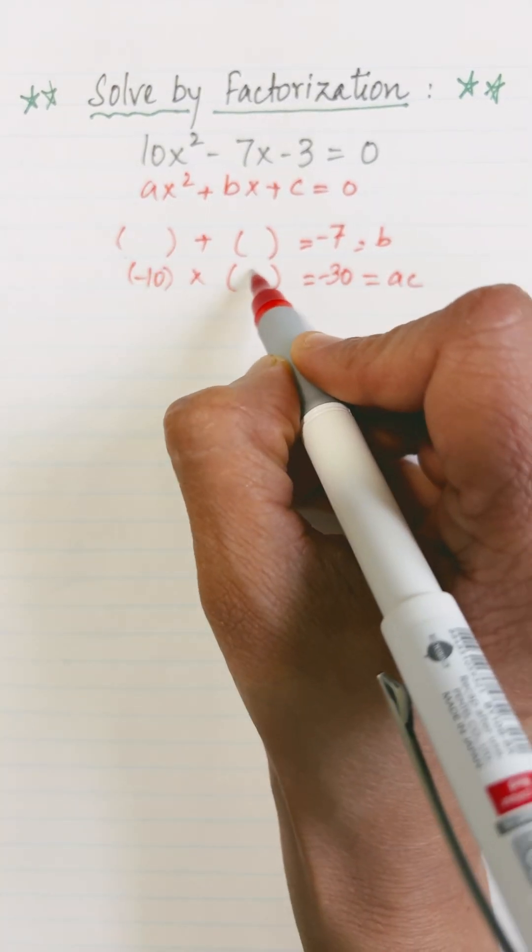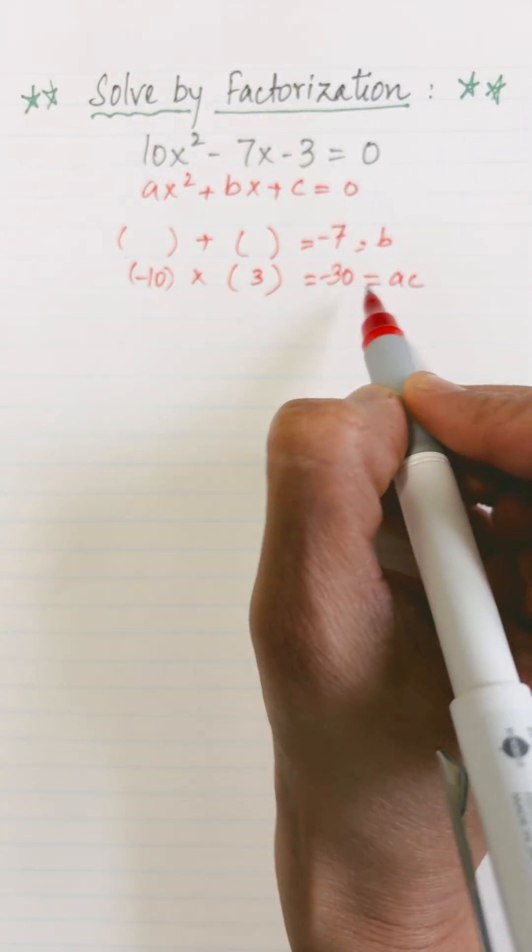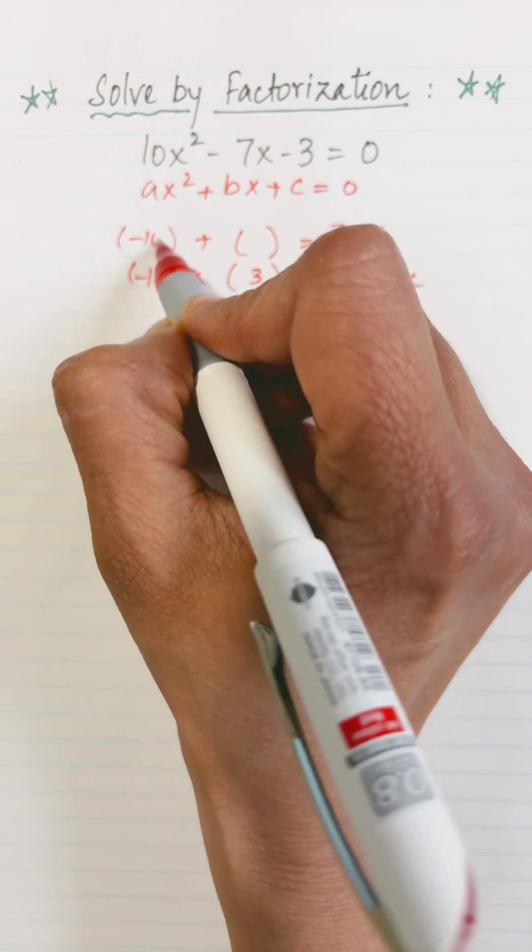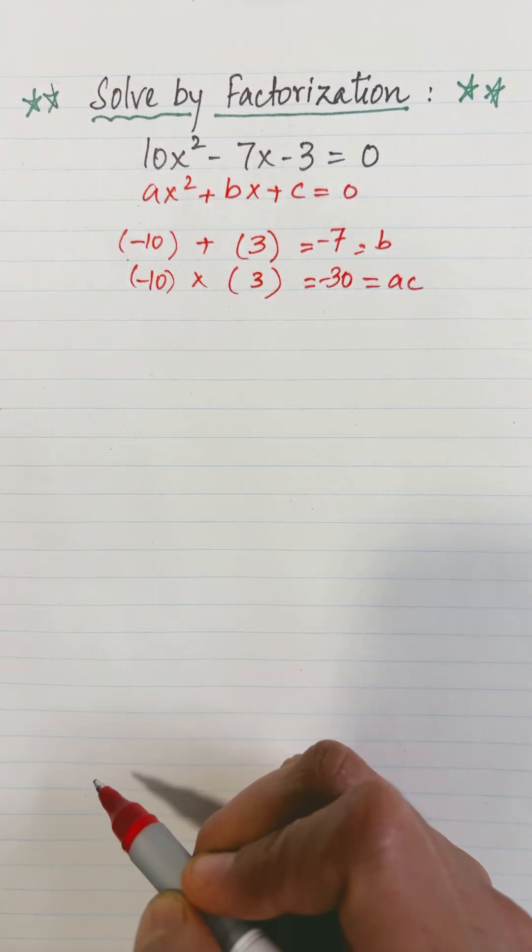Clearly the numbers are -10 and 3 because -10 times 3 is -30 and -10 plus 3 gives me -7.